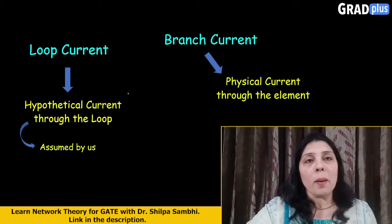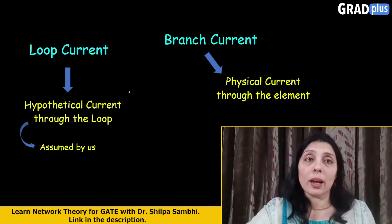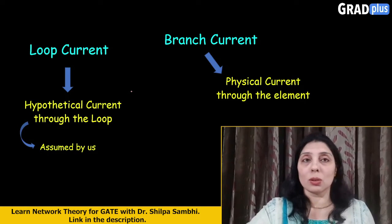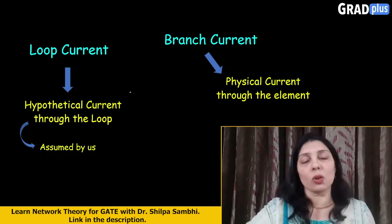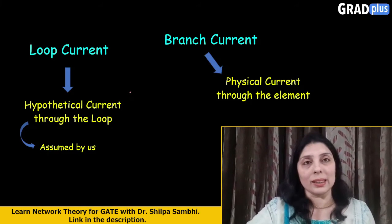Now what is a branch current? Branch current is the actual current which is flowing through the branches, through that particular element. It could be a resistor, it could be a capacitor, it could be an inductor, or any other circuit element.